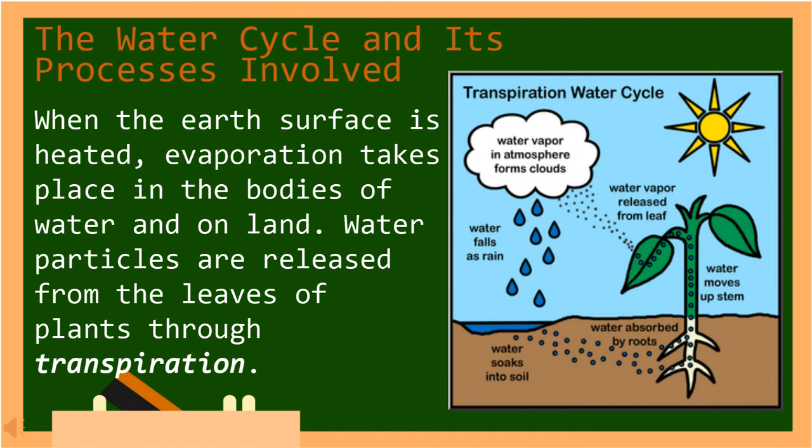When the earth's surface is heated, evaporation takes place in the bodies of water and on land. Water particles are released from the leaves of plants through transpiration. In Tagalog, kapag ang ibabaw ng lupa ay nainitan, ang pagsingaw ay nagaganap sa mga katawan ng tubig at sa lupa. Ang mga maliliit na butil ng tubig ay inilalabas mula sa mga dahon ng halaman sa pamamagitan ng transpiration.